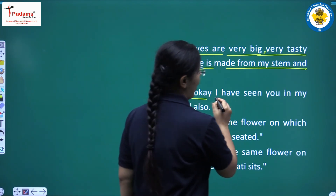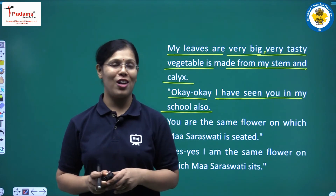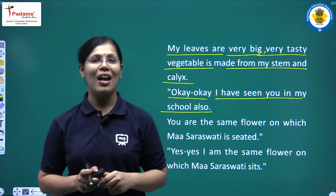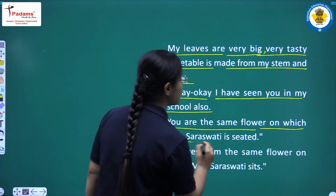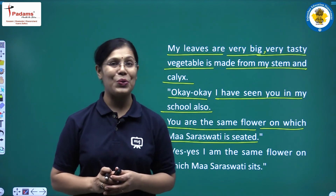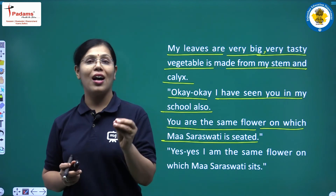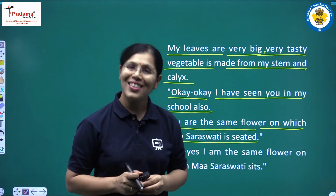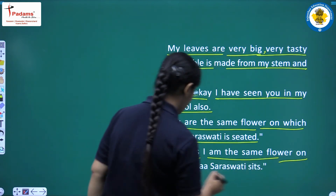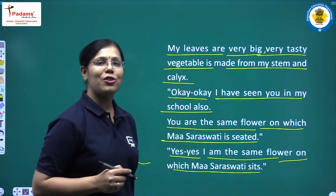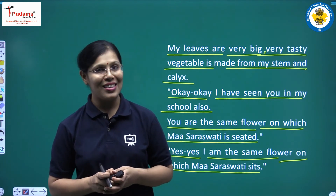Khushi said, 'Okay, lotus flower, I have seen you in my school also. You are the same flower on which Ma Saraswati is seated.' Khushi recognized the lotus flower. Lotus replied: 'Yes, I am the same flower on which Ma Saraswati sits.'